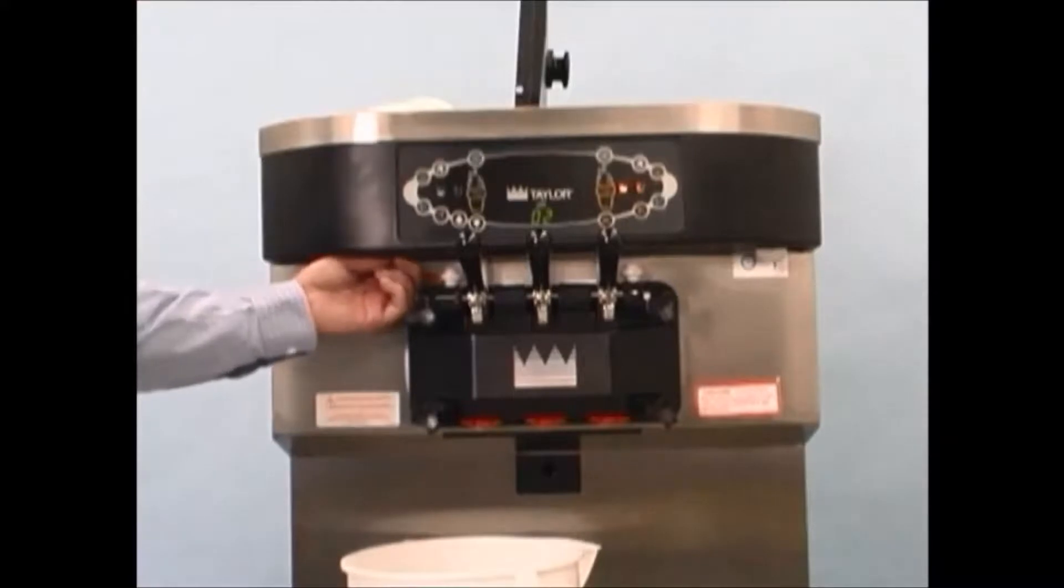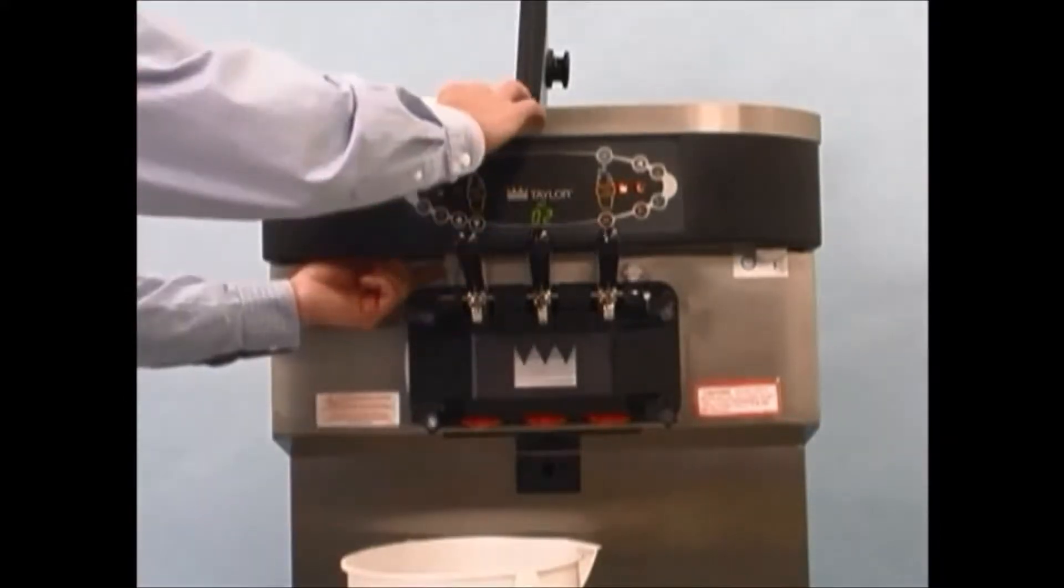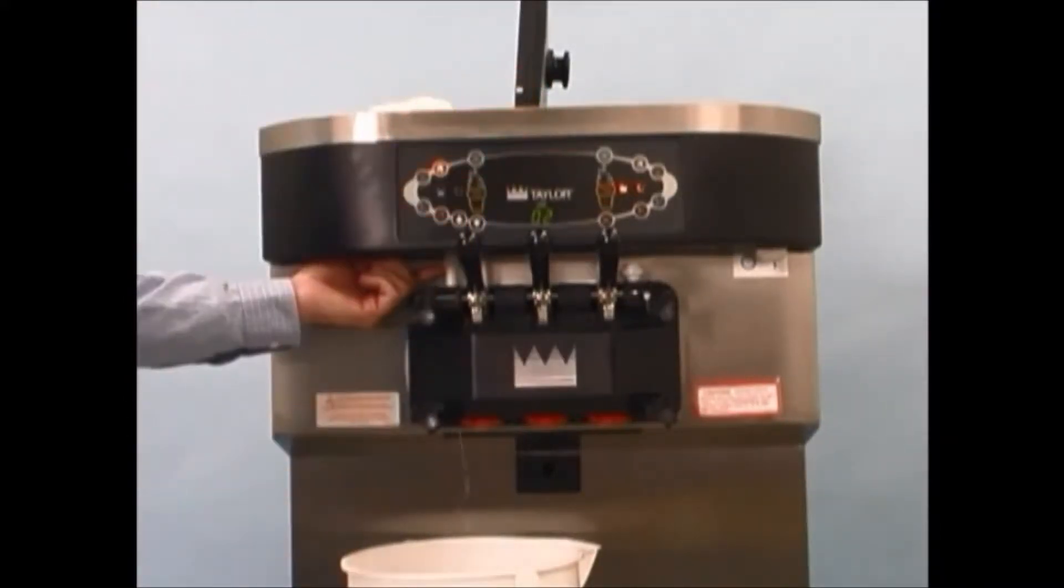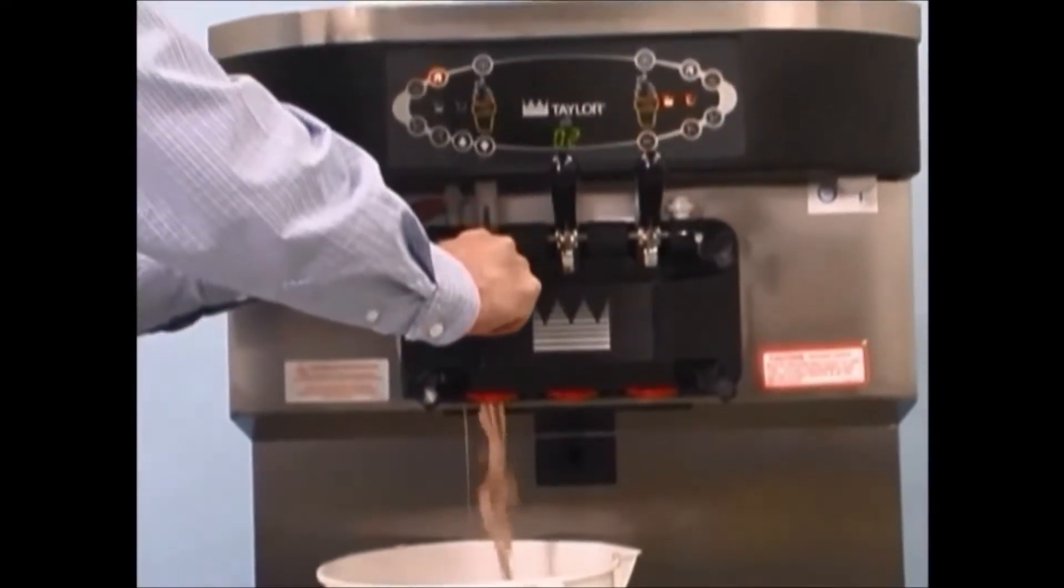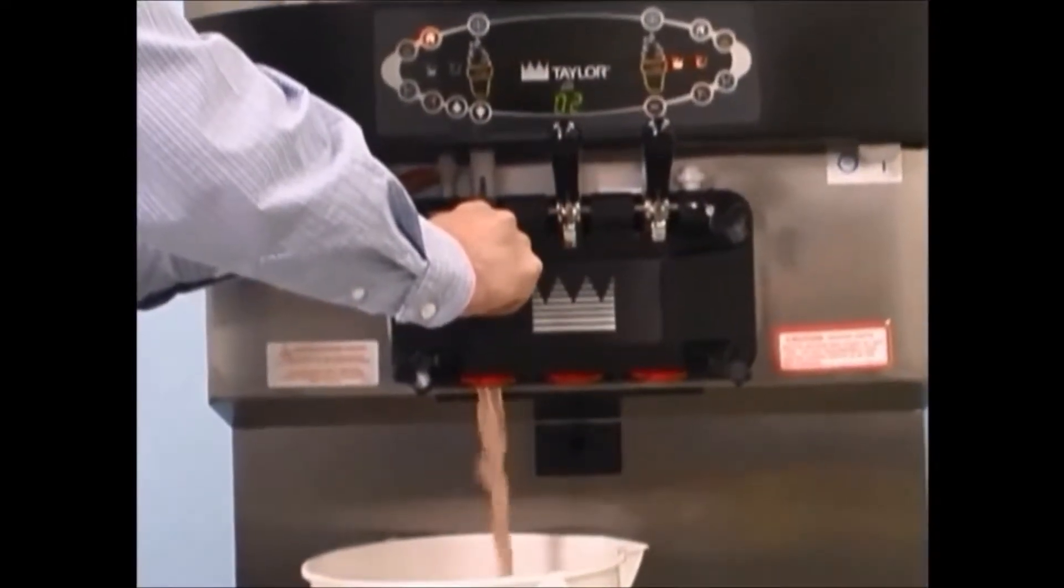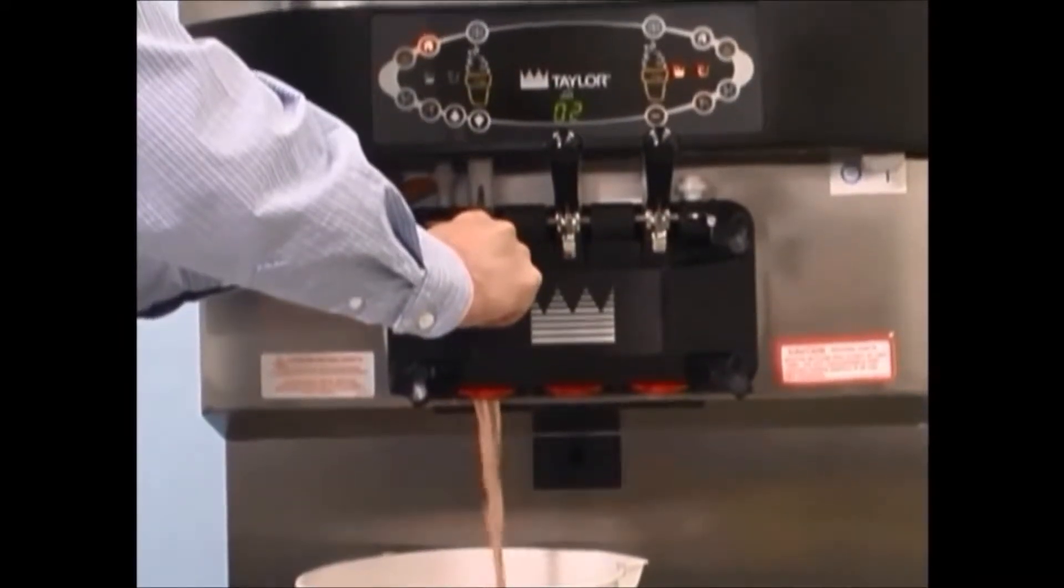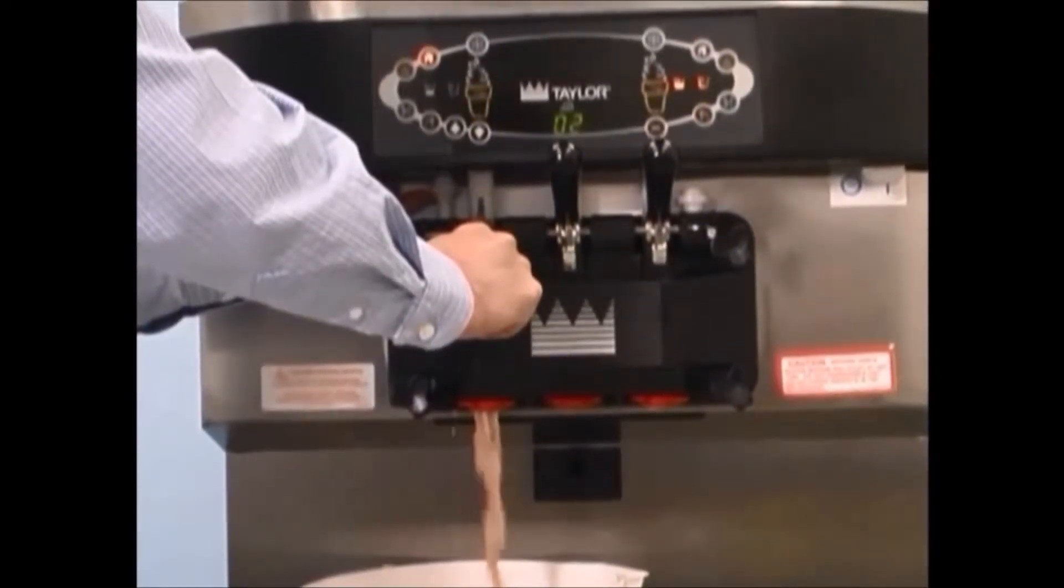With a pail beneath the door spouts, raise the prime plug and press the wash button. When a steady stream of rinse water is flowing from the prime plug opening in the bottom of the freezer door, open the draw valve. Drain all the rinse water from the door spout.